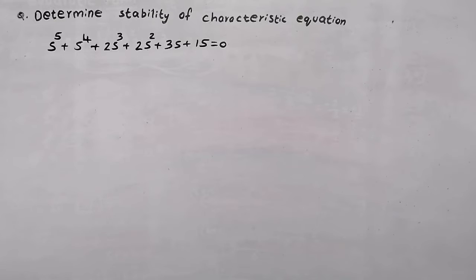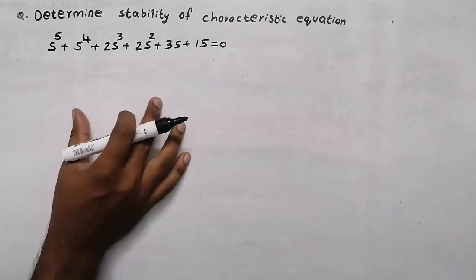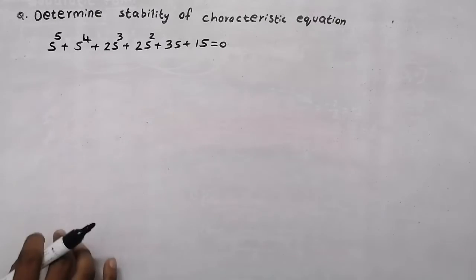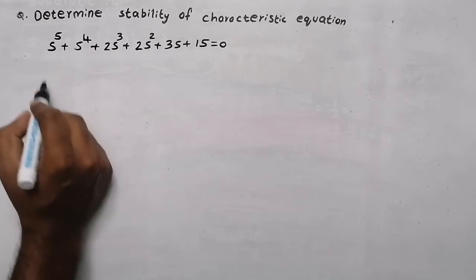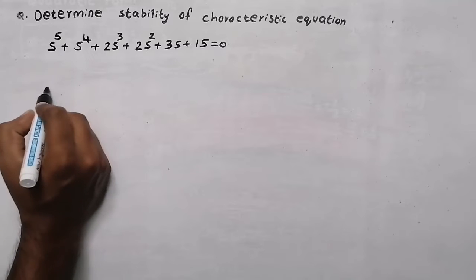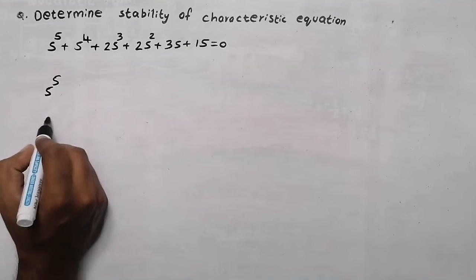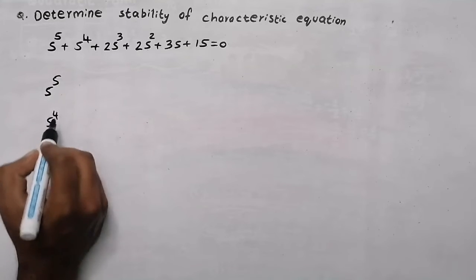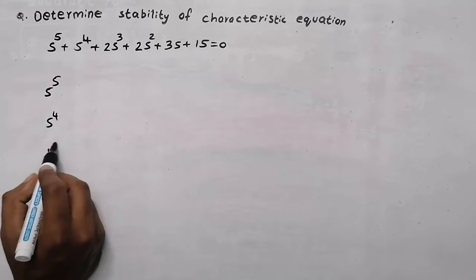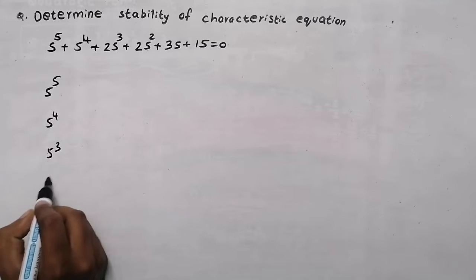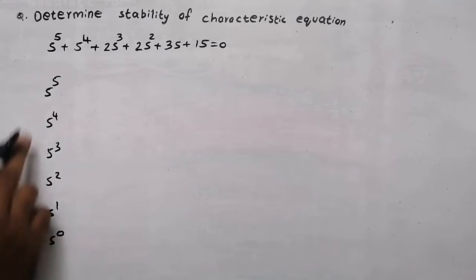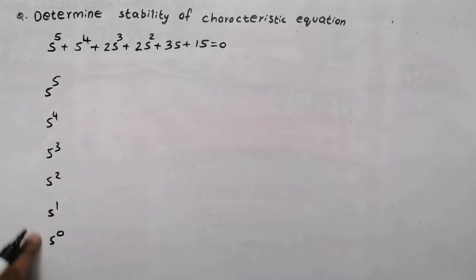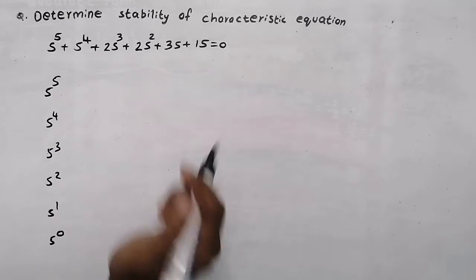In order to find the stability of this characteristic equation, first of all write a column with the powers of s. So here it is s raised to 5. The first element will be s raised to 5, then s raised to 4, s raised to 3, s raised to 2, s raised to 1, and s raised to 0. So this is the column with the powers of s.